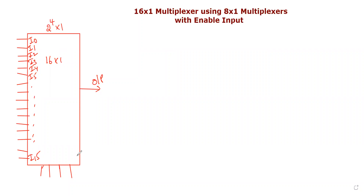We have 4 selection lines: S0, S1, S2, and S3. This is a 16 by 1 MUX with a single diagram — 16 inputs going into one multiplexer with a single output.